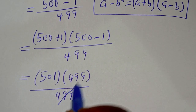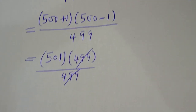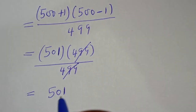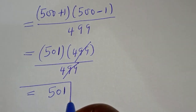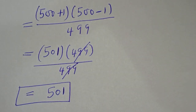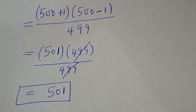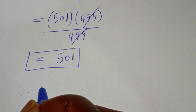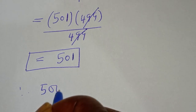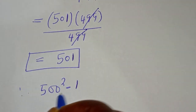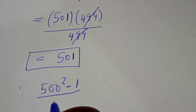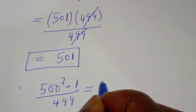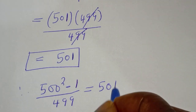Then, the 499 will cancel with 499. This is equal to 501. This is the final answer. Therefore, 500 squared minus 1 over 499 is equal to 501.